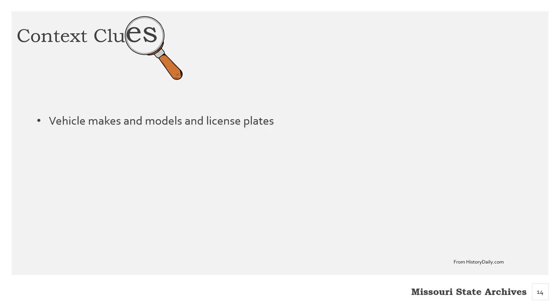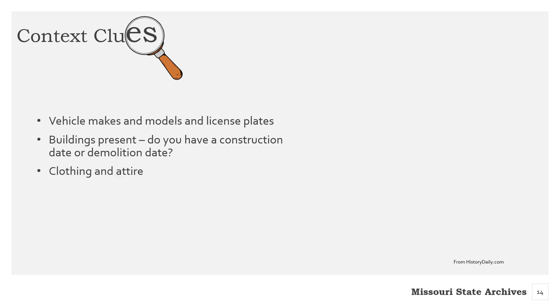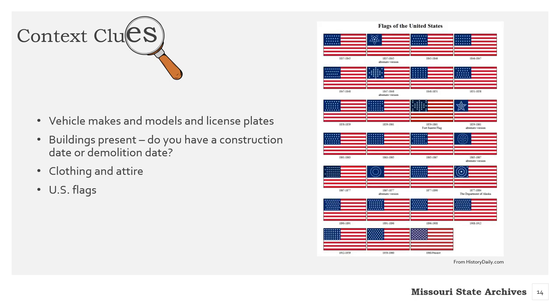Other context clues for determining dates are vehicle makes and models, buildings present, clothing attire, and US flags — which changed design multiple times — as well as the format and type of the photograph itself. If there is a child in the photo and you know who that child is, that's another great clue because you can estimate the child's age, compare with his or her birth date, and narrow the photograph's date down to a few years. At the very least, you have an earliest possible year because you know the photograph could not have been taken before the child was born.